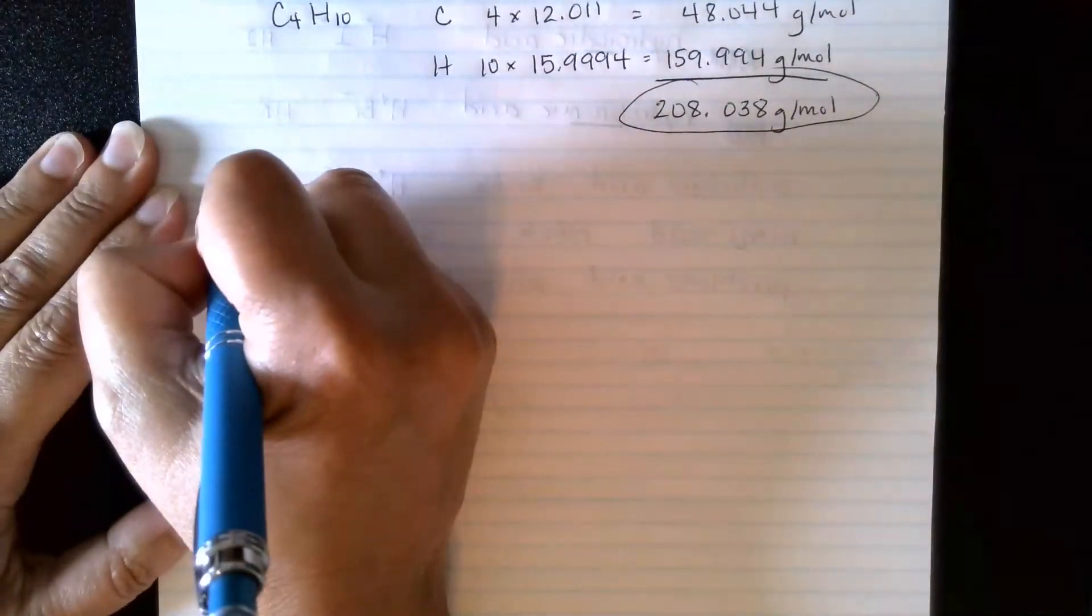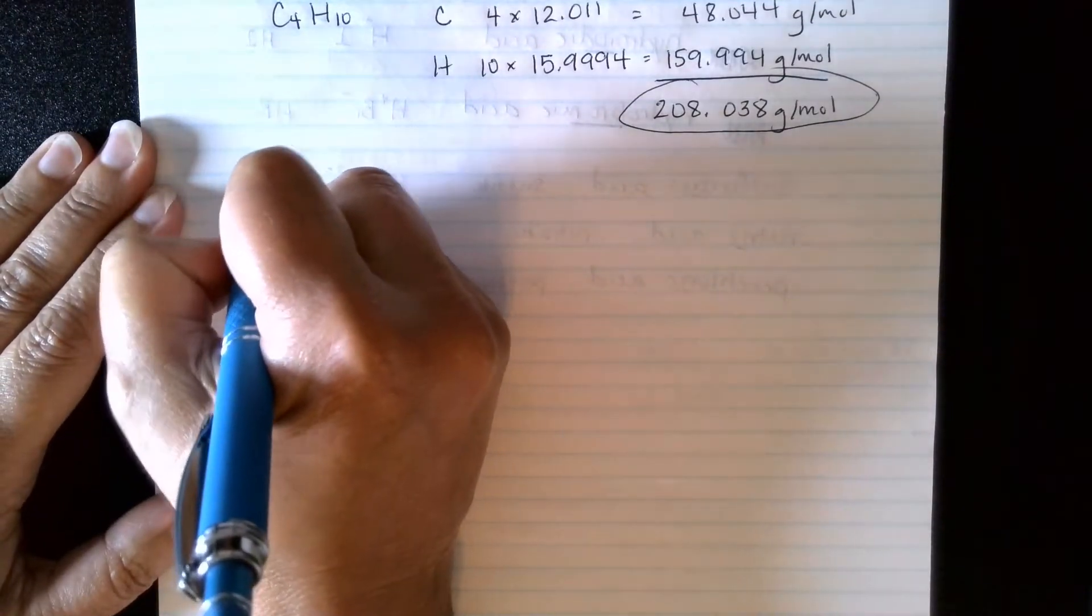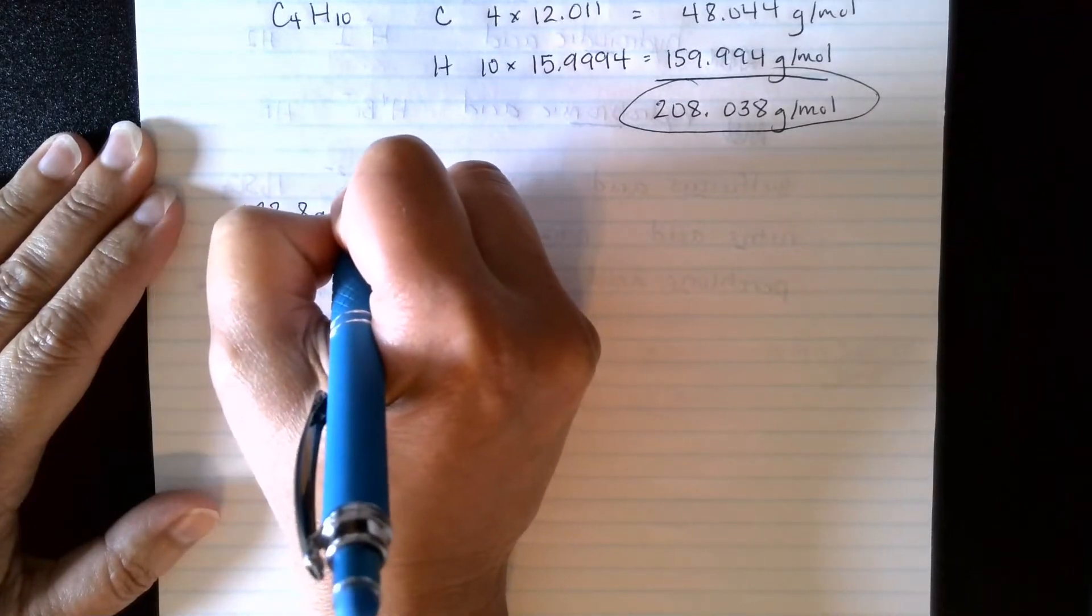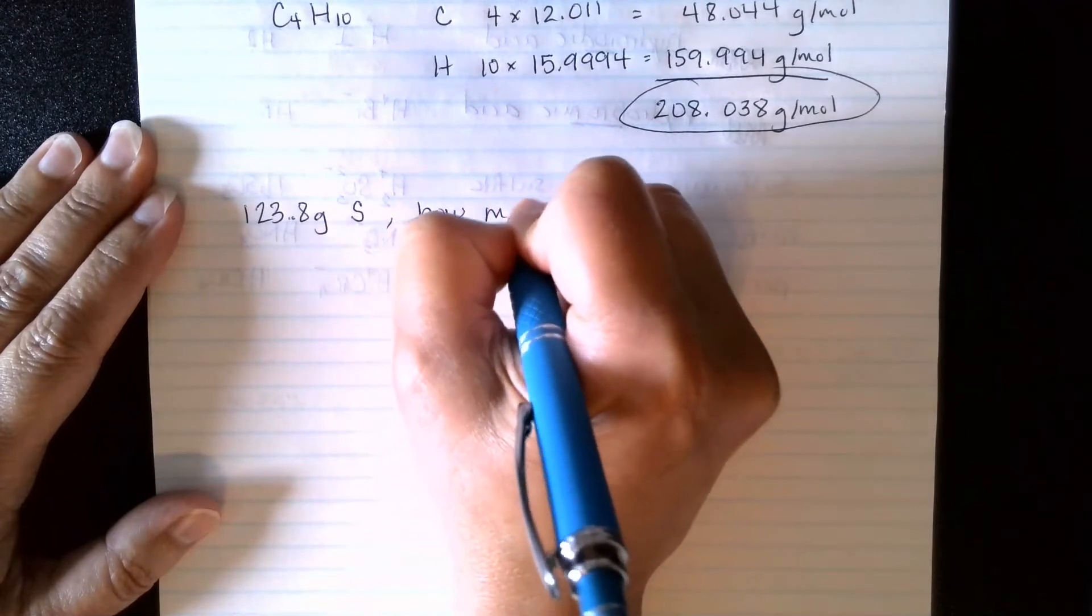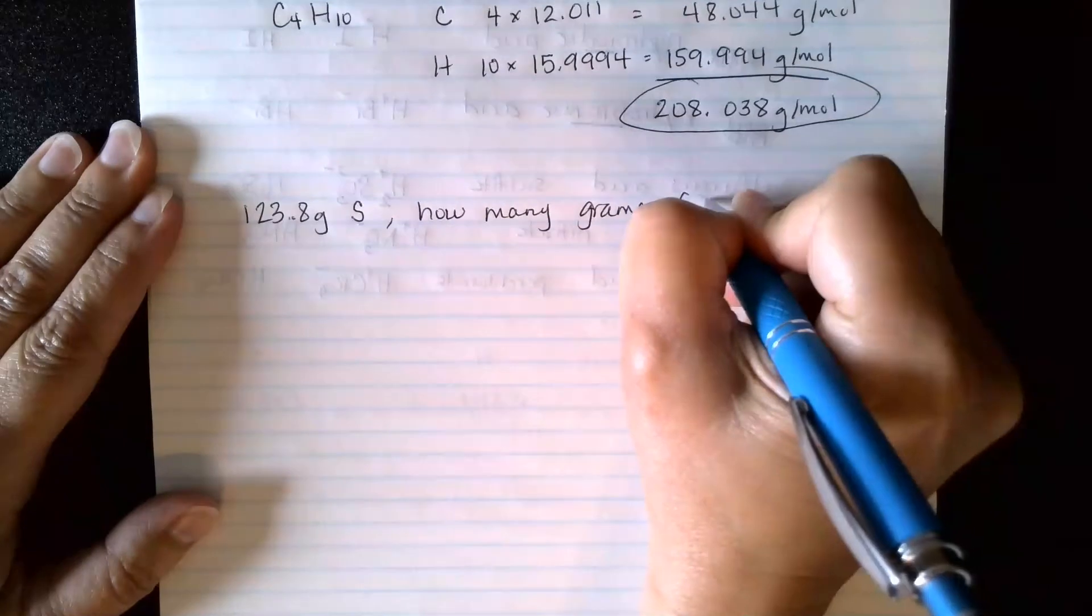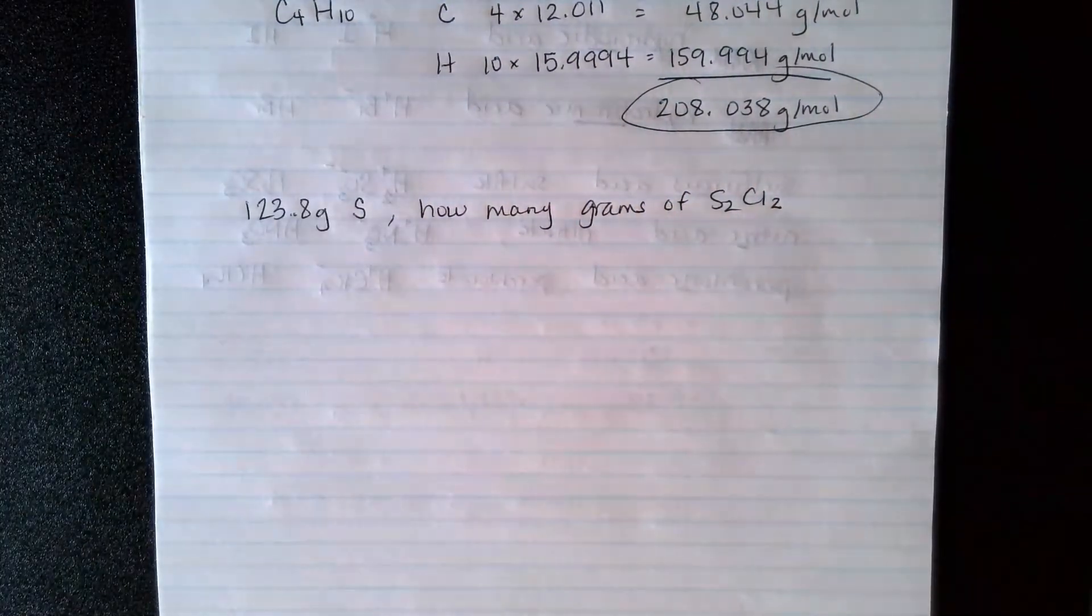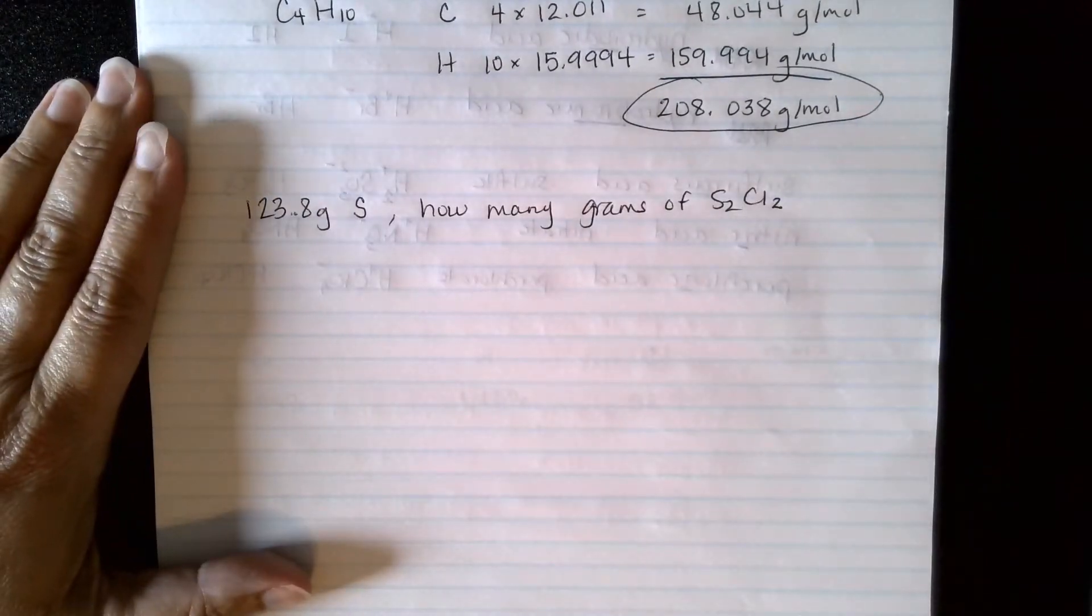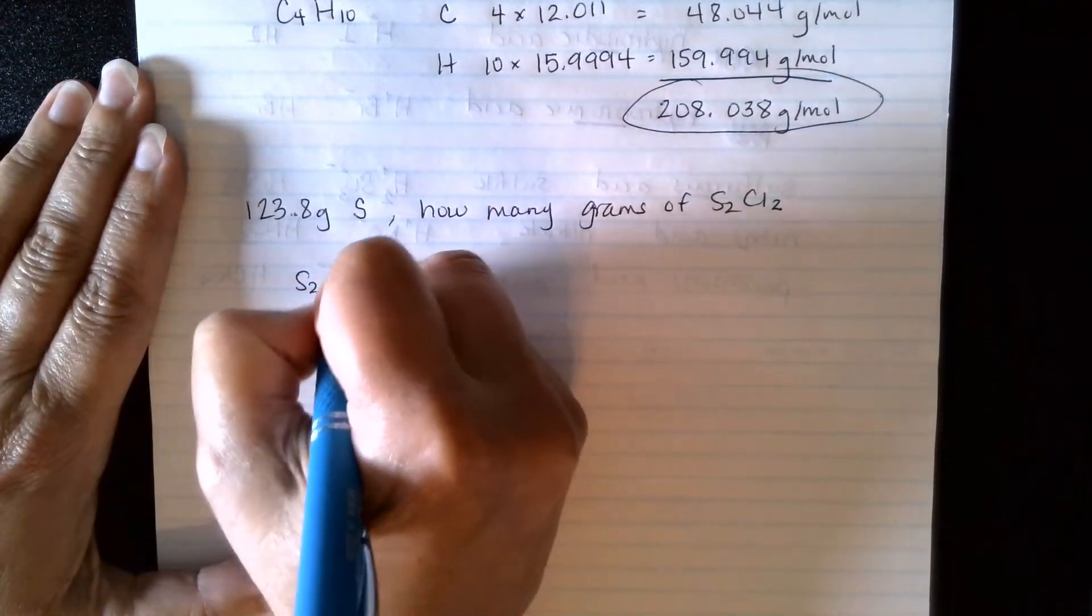So we have an example that says that we have 123.8 grams of sulfur. And we want to know how many grams of S2Cl2 do we have. Alright, so this is going to take a couple different conversion factors. The first thing we're going to need to do is find that molar mass that we just learned how to calculate.